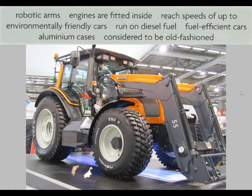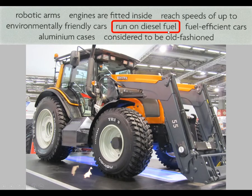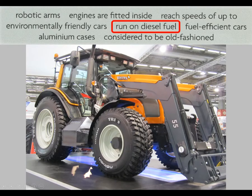Look at this picture. This picture shows a vehicle which runs on diesel fuel. Usually, large vehicles like tractors and trucks use diesel fuel, and diesel fuel is dirtier than other types of fuel. So, vehicles that run on diesel fuel are usually considered to be old-fashioned.